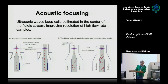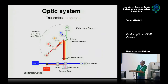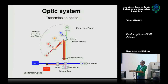Now we move to the optic subsystem, which includes first of all the lasers — they can be lasers of different wavelengths for the excitation light. There are lenses that collimate the laser beam into the flow cell, and a number of collection lenses, dichroic mirrors, and filters to split the light into different wavelengths.